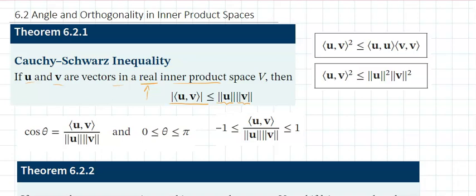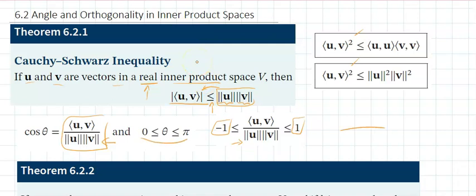From Cauchy-Schwarz, we know that the ratio of the inner product to the product of magnitudes is between negative 1 and 1. Dropping the absolute value gives a value between negative 1 and 1, and the angle is between 0 and pi. If this value is positive, the angle is acute; if negative, the angle is obtuse.